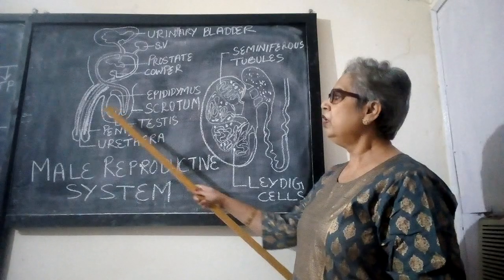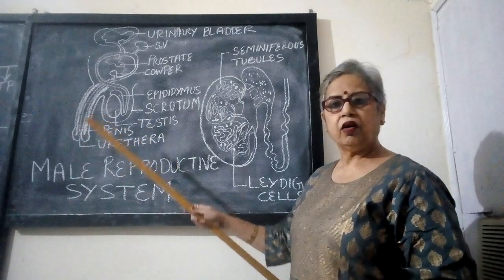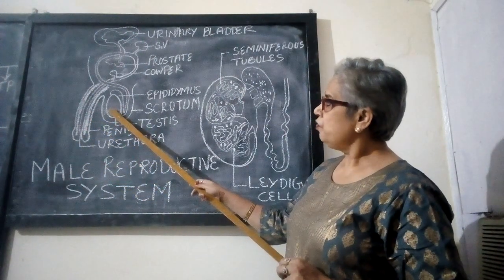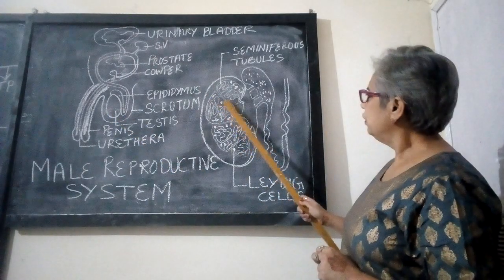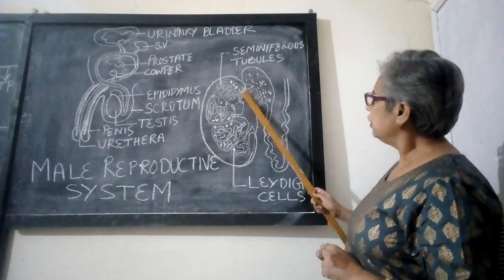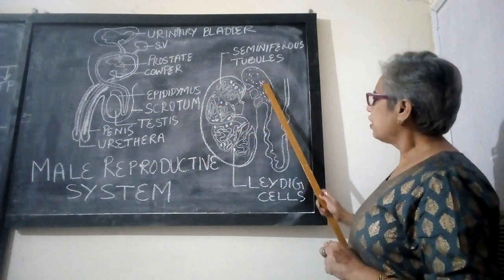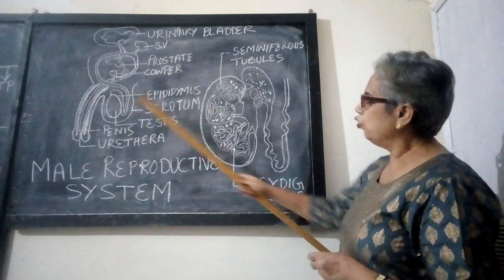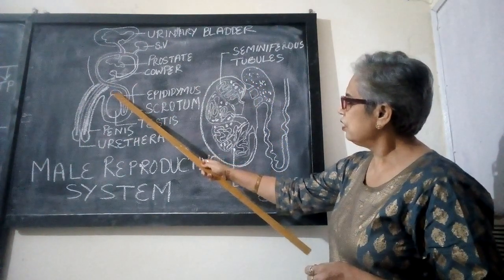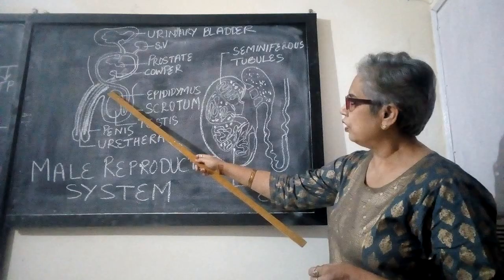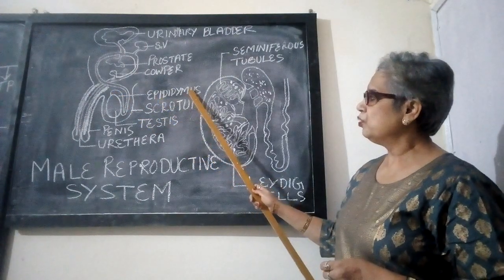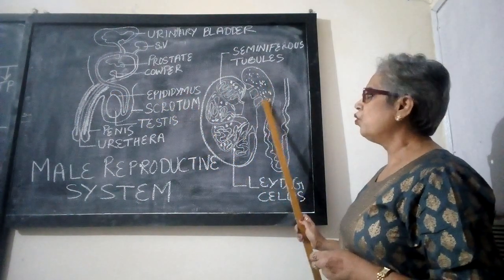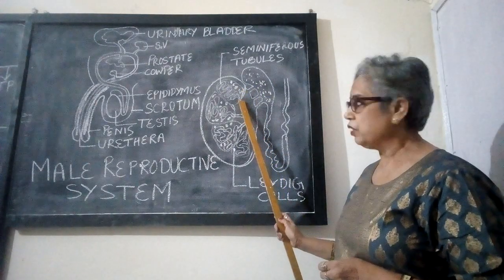Now we come to the accessory or secondary organs. The sperms which are produced in the testes pass through ducts into this cap-like structure on the testes called the epididymis. The sperms get stored here in the epididymis.